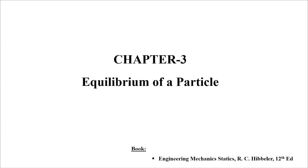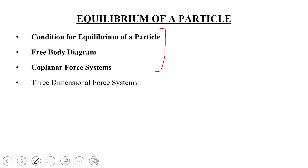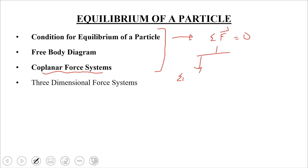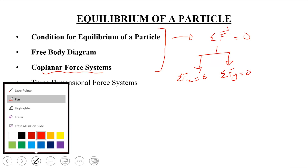We'll cover chapter number three today from the book Engineering Mechanics by RC Hibbeler. In the last lecture we discussed three topics: the condition for equilibrium of a particle. When dealing with equilibrium of a particle, there shouldn't be any unbalanced force acting on it, meaning we apply summation F equals zero. For a coplanar force system, we resolve this into two components: summation Fx equals zero and summation Fy equals zero.